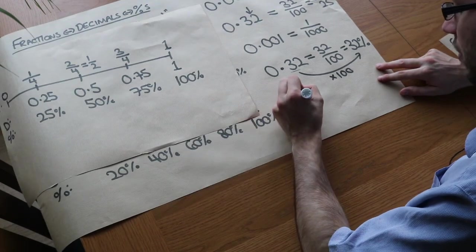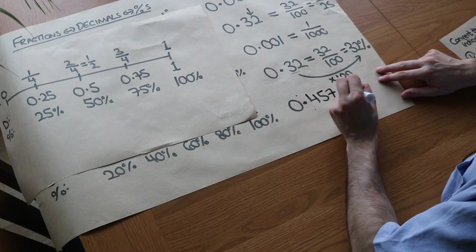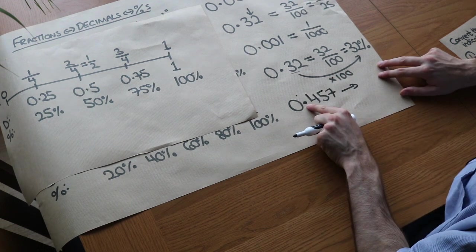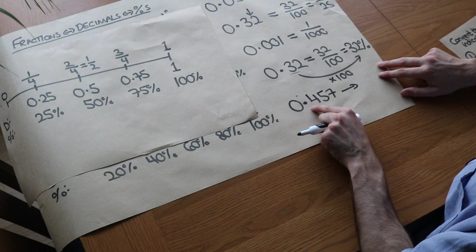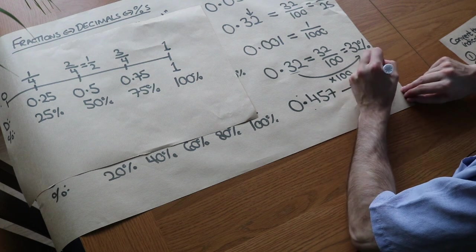So if we had, for example, 0.457, if we wanted to convert that to a percentage, we just multiply by a hundred. So that means the decimal point twice, one, two, we get 45.7%.